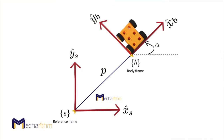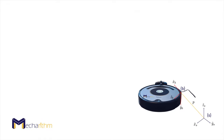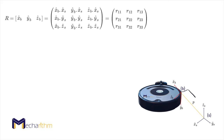In the previous lesson, we saw the rotation matrix describing the orientation of a toy car on the plane. Now let's derive a similar representation for the orientation of a robot in space. Suppose a robot in space, as shown in this figure, where B is the stationary body frame instantaneously attached to the moving body, and S is the space or reference frame. The rotation matrix R can be defined as a representation of the body frame unit axes expressed in the frame, as shown in this equation.